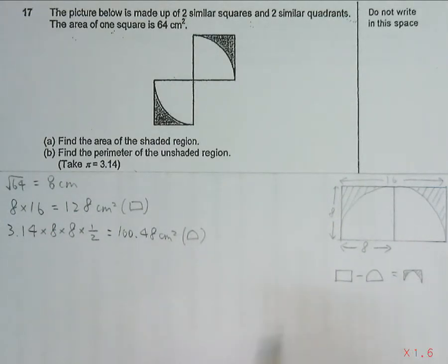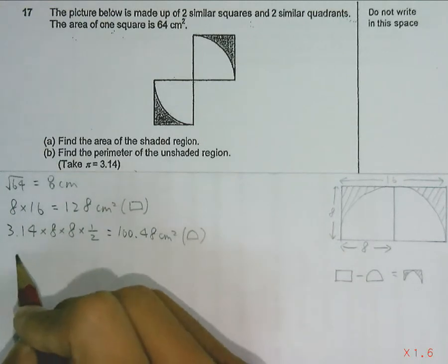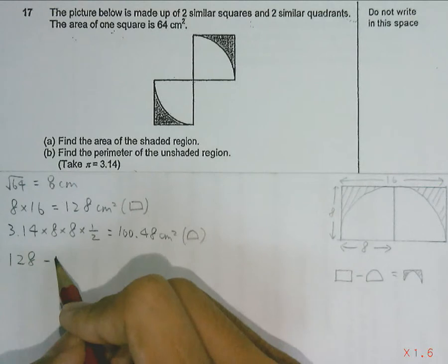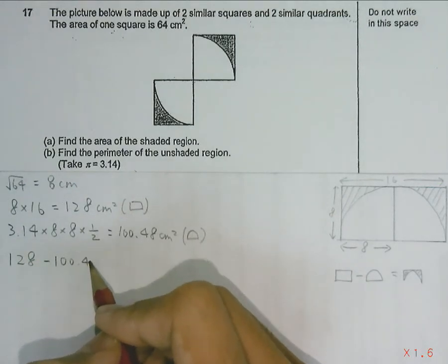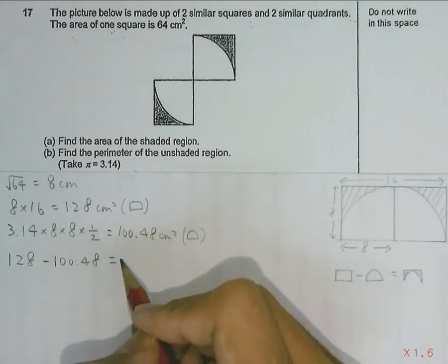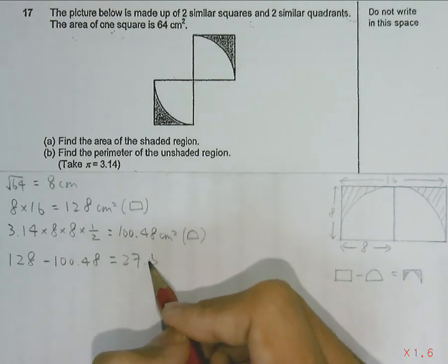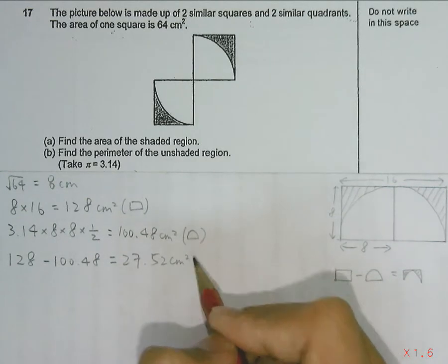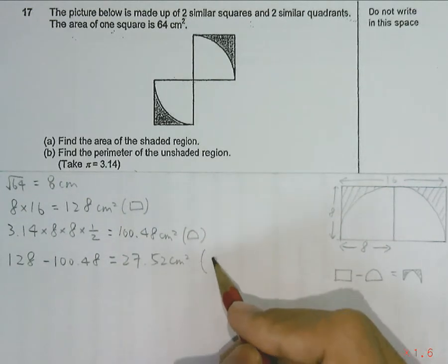So the area of the shaded region can be found by taking this, subtracting off this. You will get 128 minus 100.48, and the answer will be 27.52 cm². So this is our answer for Part A.